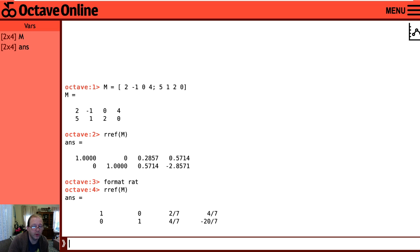So the row reduces to 1, 0, 2/7, 4/7. And then 0, 1, 4/7, negative 20 over 7.